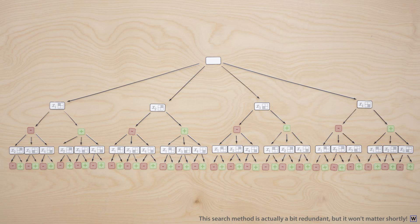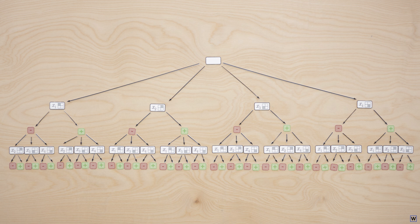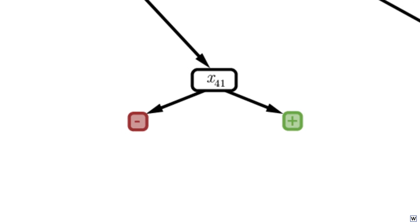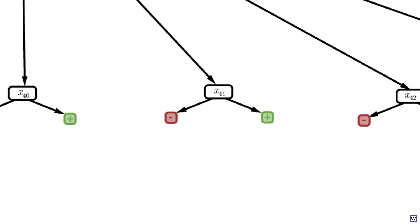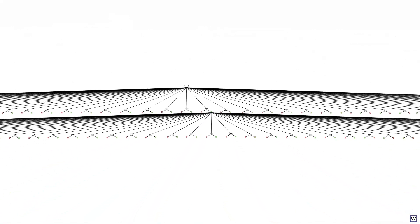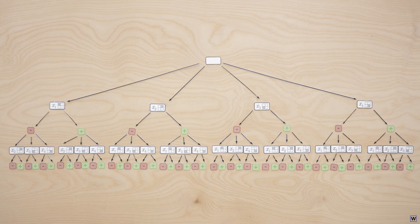So each time we add a pixel to our rule, all of our branches branch, resulting in the exponential growth we're all too aware of. This branching is much worse on our real 81-pixel data. Going from one to two-pixel rules creates 160 new branches on each of our existing 162 branches.